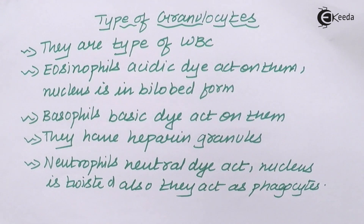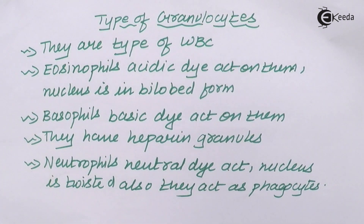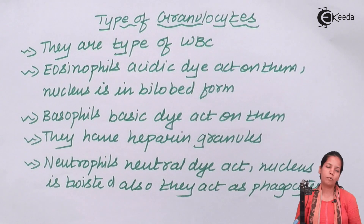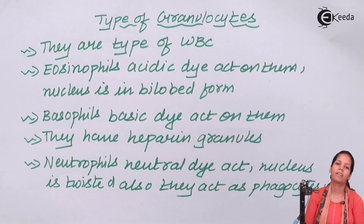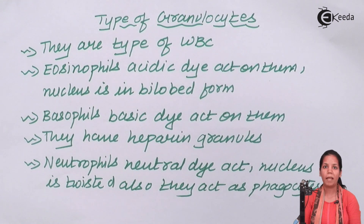WBCs are the basic defense mechanism of the body — the primary level defense army. They have a number of types, and one of these types is granulocytes. I hope students are now very clear with the concept of granulocytes as a type of WBC.